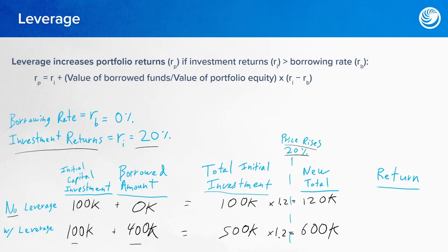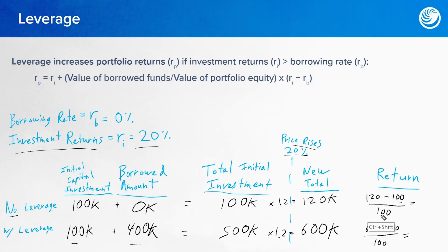Now what is the return on both of these? The return can be calculated by taking the new price minus the old price and then dividing by our initial capital. In the case of no leverage, we invested $100,000 initially, it grew to $120,000, so the total growth is $20,000. Dividing by the initial $100,000 gives us a 20% return. However, with leverage, we had $500,000 and it grew to $600,000, growing by $100,000. We only put down $100,000 initially, so we actually had a 100% return — leverage increased our return.